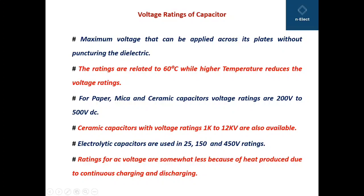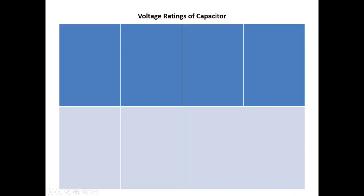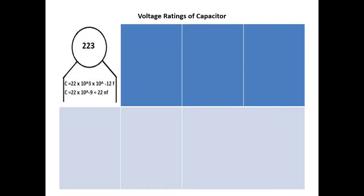For the positive half cycle AC flows in one direction, and for the negative half it flows in another. Voltage ratings of capacitors are generally marked — for example, '223' means 22 × 10³ × 10⁻¹² farads, which simplifies to 22 × 10⁻⁹, that is 22 nanofarads. So if '223' is written on a capacitor, it is read as 22 nanofarads.